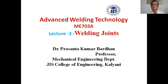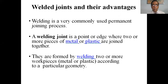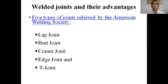Today's lecture is on welding joints and their advantages. Welding is a very commonly used permanent joining process. A welding joint is a point or edge where two or more pieces of metals and plastics are joined together. They are formed by welding two or more work pieces, metal or plastics, according to particular suitability. As per the American Welding Society, there are five welding joints: lap joint, butt joint, corner joint, H joint, and T joint.